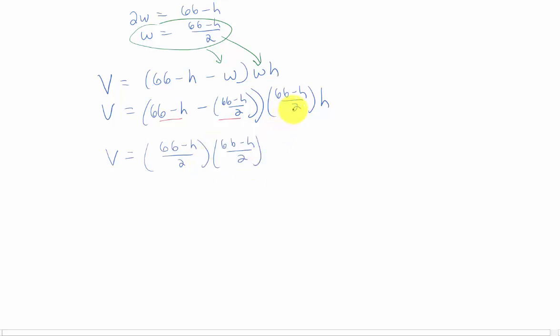Our second set of parentheses here, we're just going to keep writing down. Now we can multiply this out a little bit if we'd like. We have 66 minus h squared in the numerator. We have a 4 in the denominator, which I'll call 1/4th. We still have this h outside. This answer should be perfectly fine for this first part of the problem.